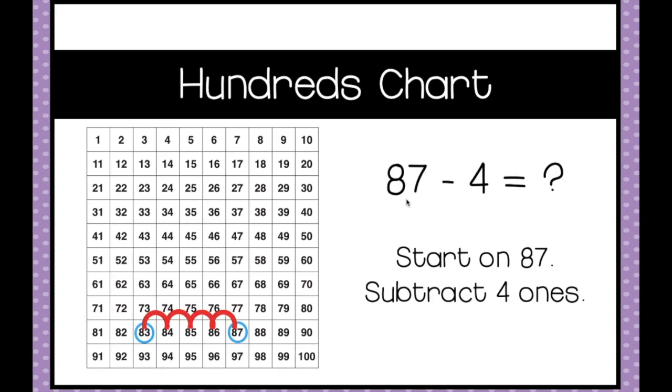So this question, 87 minus 4 equals what? We start on 87, we subtract the 4 ones by moving 1 to the left each time. 1, 2, 3, 4, and the answer is 83.